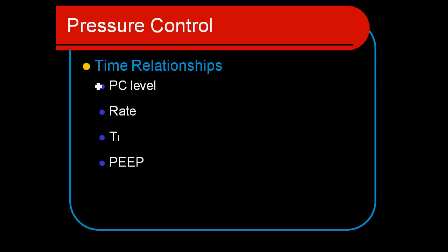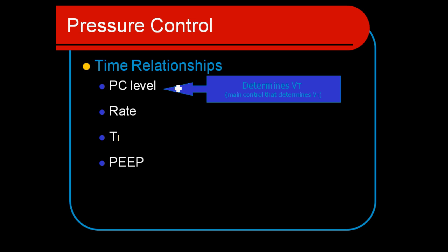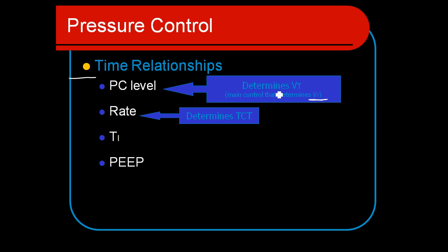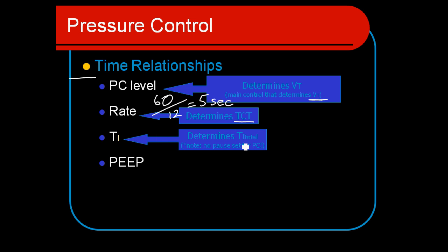Looking at time relationships as we did with volume ventilation: the pressure control level is an important element of tidal volume — the higher the pressure control level, the more volume enters the lungs. The rate determines our total cycle time; at a rate of 12 with 60 seconds, that gives a five-second total cycle time. The TI determines exactly how long the pressure control level is delivered. Unlike volume ventilation where TI was uncertain, in this mode we know precisely what TI is.